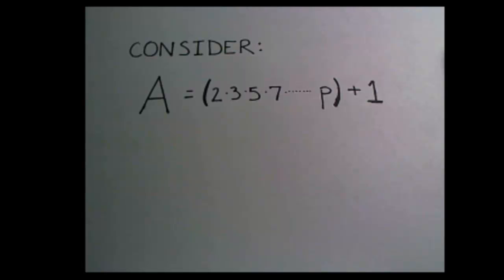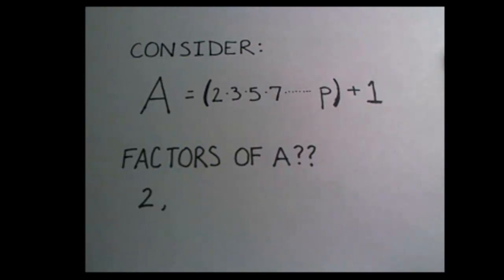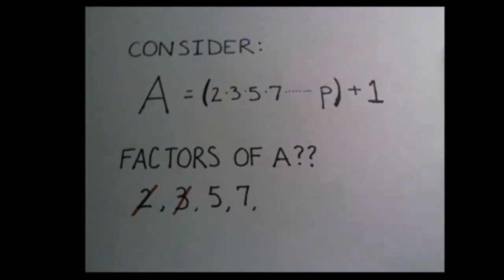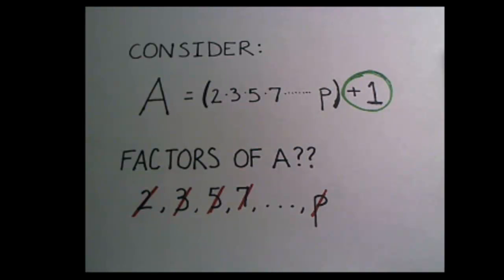Then you could ask, what divides evenly into A? Well, we know two does not divide evenly into A because A is not a multiple of two. It would leave a remainder of one if we divided two into A. In the same way, three, five, seven, and every other prime number up to and including P does not divide evenly because it would leave a remainder of one. This leaves only two options.